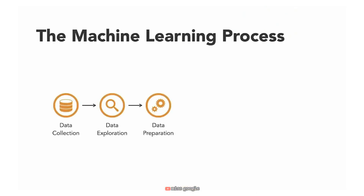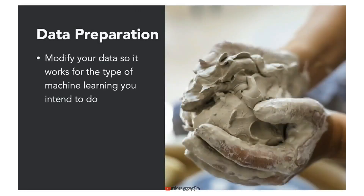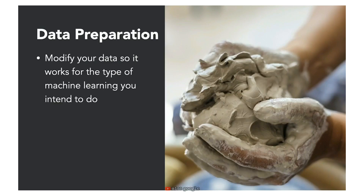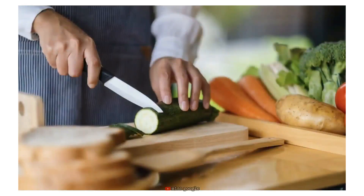The next step is data preparation — making sure our data is suitable for the machine learning approach we intend to use. It involves resolving data quality issues such as missing data, noisy data, outlier data, and class imbalance. Data preparation also involves transforming the structure of our data, including normalizing the data and reducing the number of rows and columns. In the salad analogy, this is when we begin to cut the vegetables — cubing, slicing, or shredding depending on the salad we want, and grilling, baking, or sautéing any chicken we plan to add.